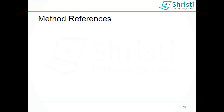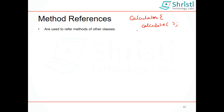In this video, let us understand about method references. Method references are used to refer to methods of other classes instead of implementing a functional interface using anonymous classes or lambda expressions. That is, assume you have a functional interface calculator with one abstract method calculate. If you want to implement this method, you need to either go in for anonymous inner classes or you can use a lambda expression. But if there is an already written method with the same functionality that is expected by calculate, instead of using a lambda expression, we can refer to that particular method. So this is called method references.